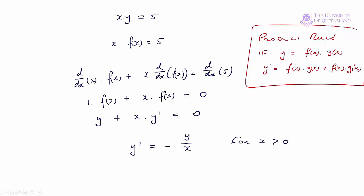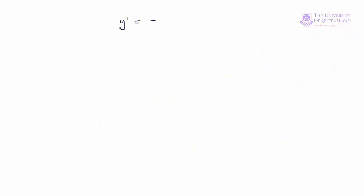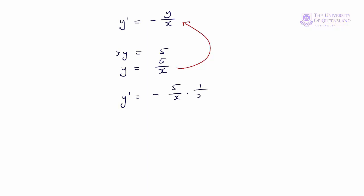We can rearrange: subtract y from both sides and divide through by x, giving y′ = −y/x for x > 0. In this simple case we can verify that this matches the result from explicit differentiation. Since xy = 5, y = 5/x. Substituting into y′ = −y/x gives y′ = −(5/x)·(1/x) = −5/x², which is of course the result we'd get by differentiating y = 5/x directly.